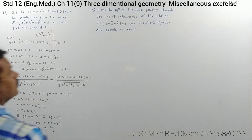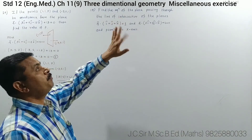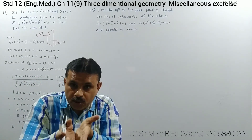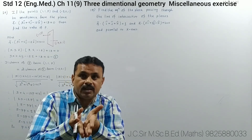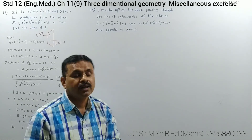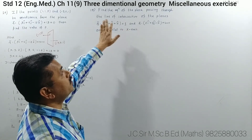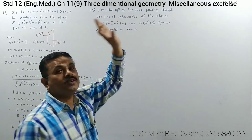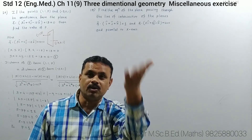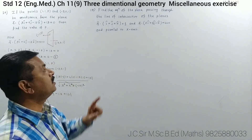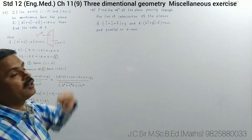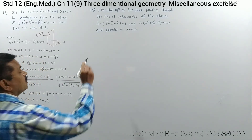Question 15: Find the equation of the plane passing through the line of intersection of two planes. If two planes intersect, the intersecting part is a line. The formula is: first plane + lambda × second plane = 0. The plane equations are given in vector form, so first I will convert them to Cartesian form.